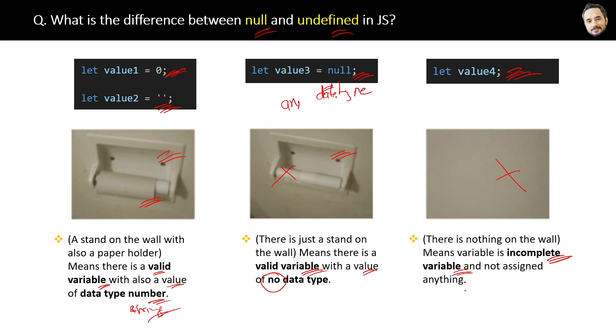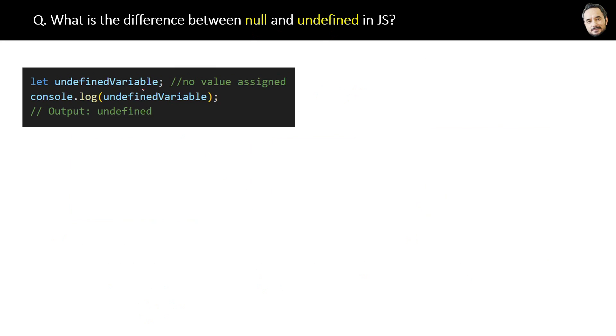Great, now let's understand the differences with the help of the code. Here is that undefined code, as you can see, here we have declared a variable, but no value has been assigned to it. And then we are printing the variable and the output is undefined. Simple, this is undefined, which is never assigned a value.